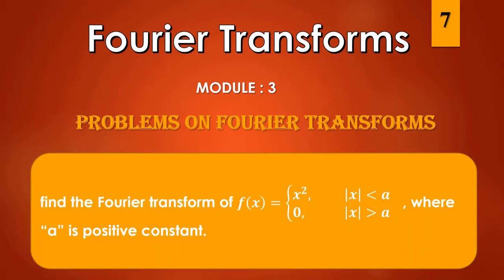In today's class we will learn about the problems on Fourier transform. The problem is: find the Fourier transform of f(x) = x² where |x| < a, and 0 for |x| > a, where a is a positive constant. The solution of this problem we will see now.